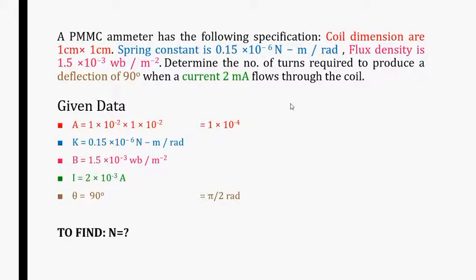We are going to determine the number of turns N. For every meter we start from the steady state or equilibrium condition. At equilibrium, the deflecting torque equals the controlling torque. For a moving coil, the deflecting torque is N·B·A·I, which we have already studied, and the control is through a spring so the controlling torque is K·θ.